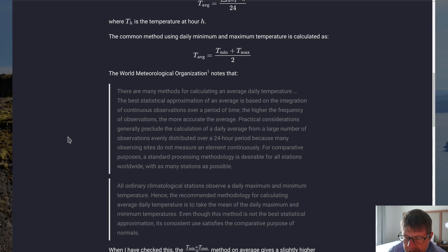For comparative purposes, a standard processing methodology is desirable for all stations worldwide with as many stations as possible. All ordinary climatological stations observe a daily maximum and minimum temperature. Hence, the recommended methodology for calculating average daily temperature is to take the mean of the daily maximum and minimum temperatures. Even though this method is not the best statistical approximation, its consistent use satisfies the comparative purpose of normals.